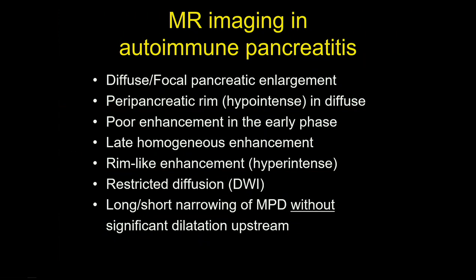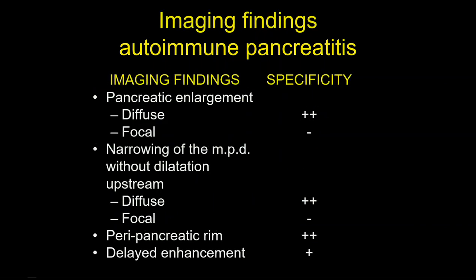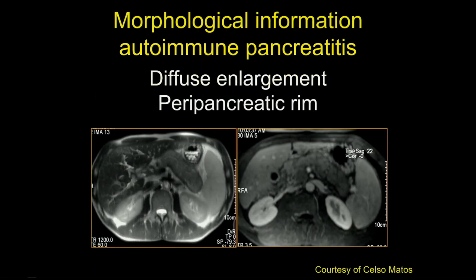On MRI, findings include diffuse or focal enlargement, peripancreatic rim which is hypointense in diffuse form, poor enhancement in the early phase, late homogeneous enhancement, rim-like enhancement, restricted diffusion, and long or short narrowing without significant upstream dilatation. Diffuse enlargement is highly specific. Diffuse narrowing is highly specific. Peripancreatic rim is highly specific. Others like delayed enhancement are less specific. A diffuse appearance with peripancreatic rim is the typical appearance of diffuse autoimmune pancreatitis.